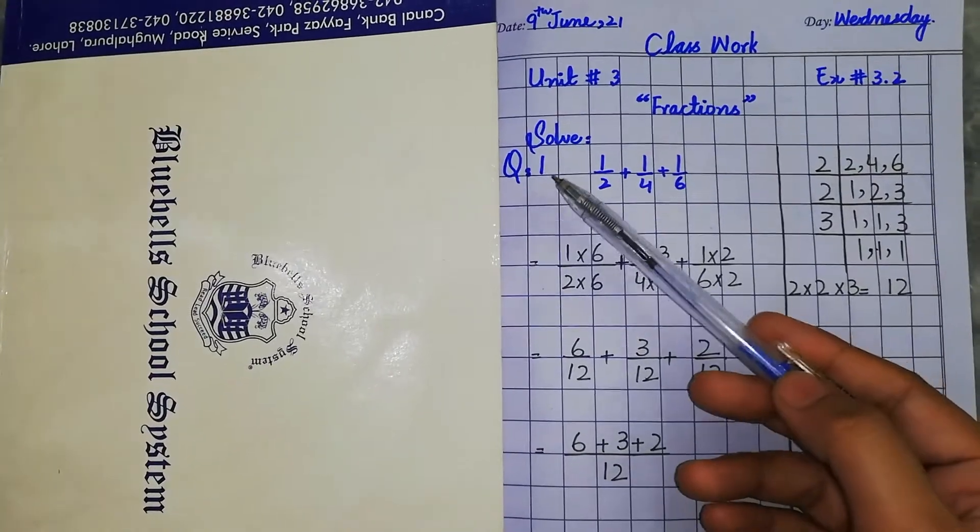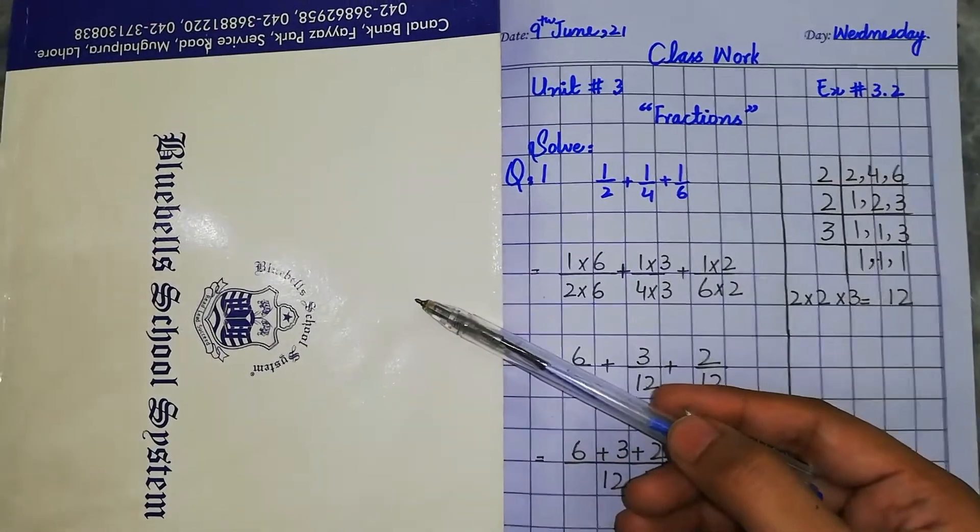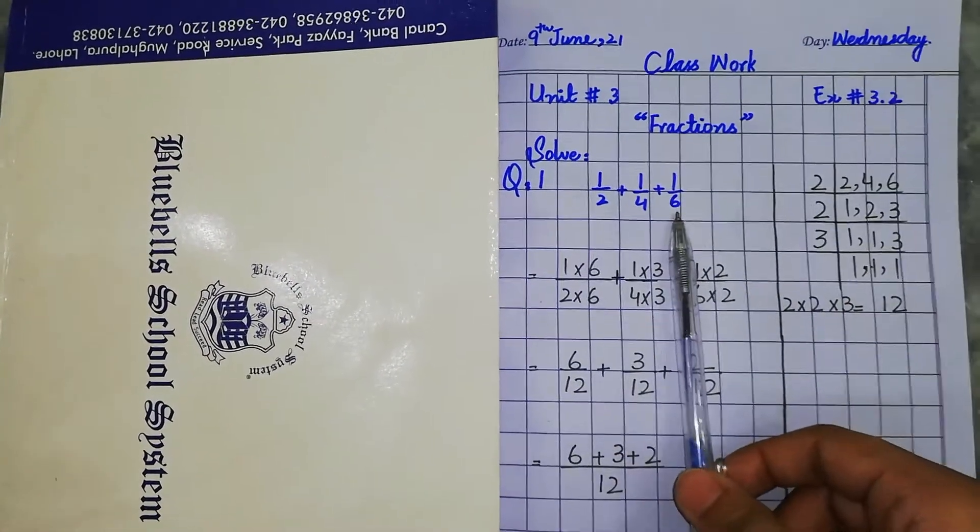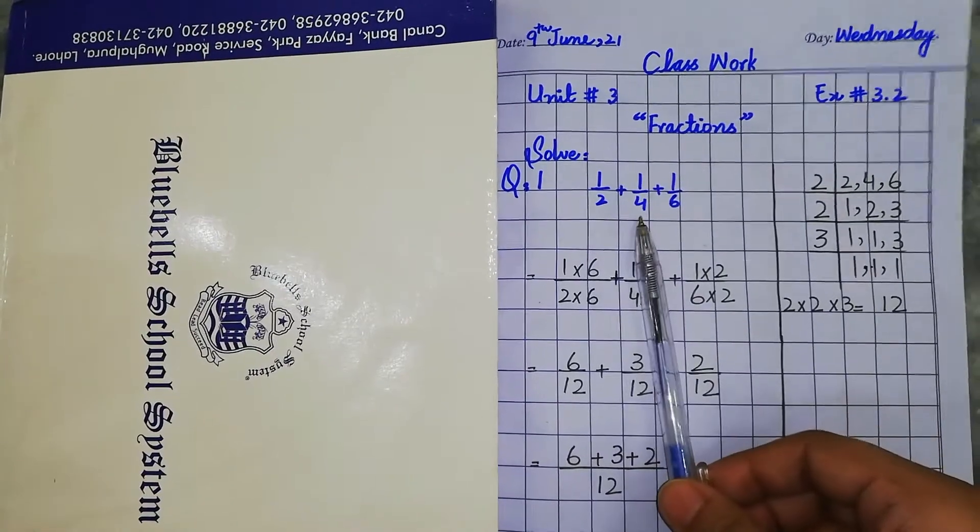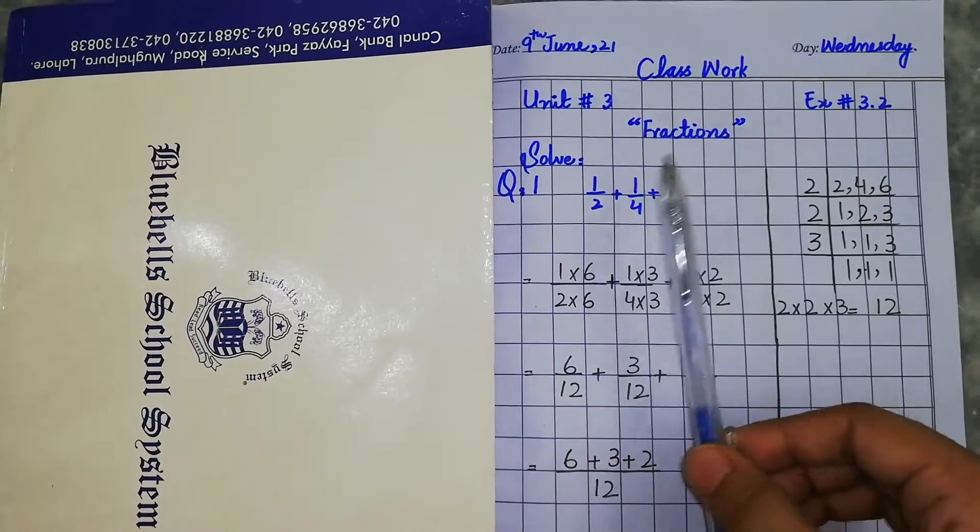Students, exercise number 3.2 is similar to exercise number 3.1. In this exercise, you will have three fractions that you will add and then subtract.